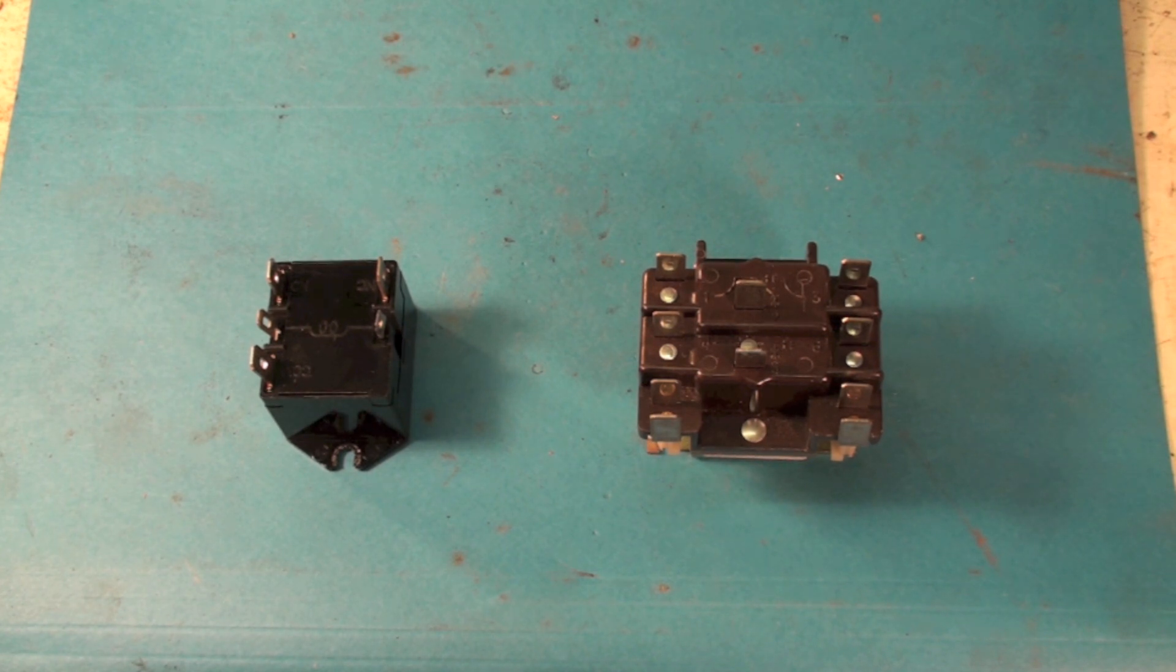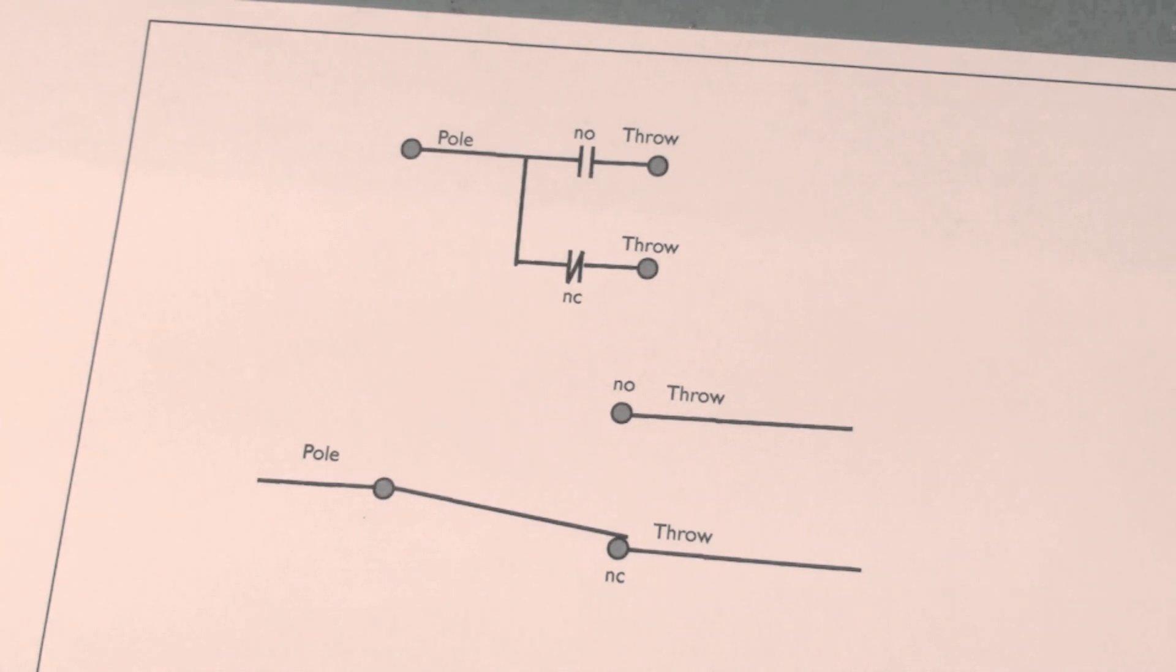The first thing I'm going to do is give you a diagram representation as you would see in a wiring diagram. Here we have two diagram representations of the single pole double throw switch.